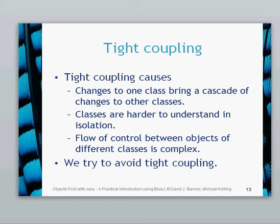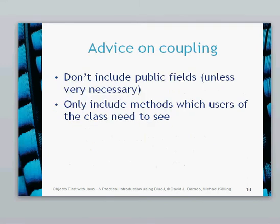If the flow of control between objects or different classes is complex, then it's tightly coupled — we try to avoid this. Some advice on coupling: don't include public fields unless really necessary, so have all your fields private. Only include methods which users of the class need to see, and really question why a method would need to be public. Otherwise, make all your fields and methods private.